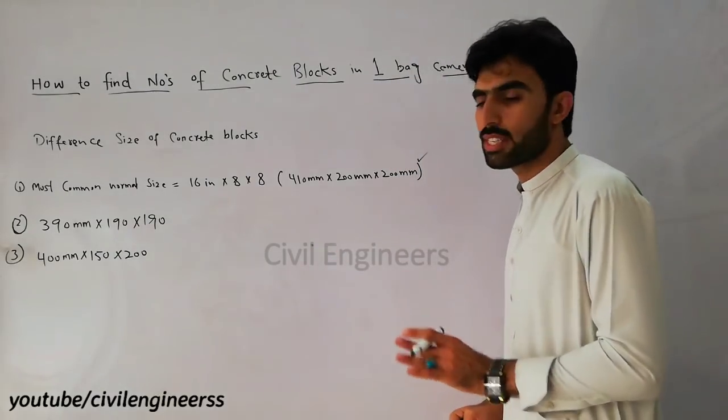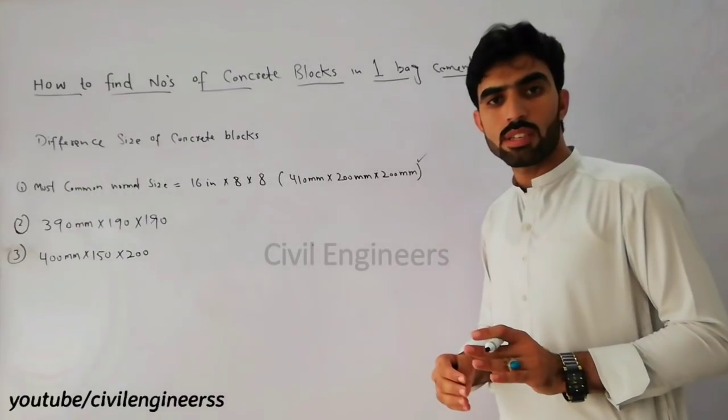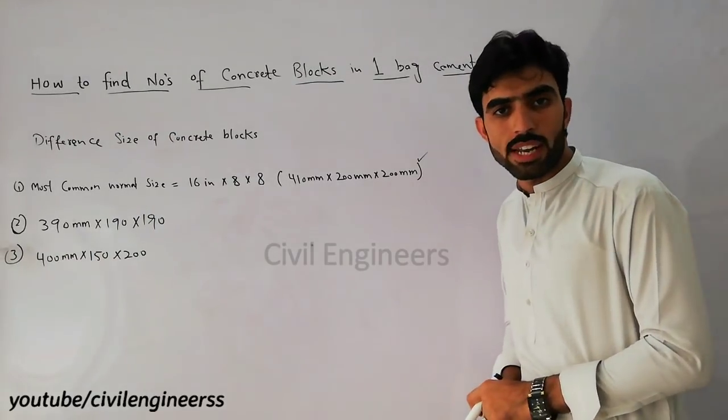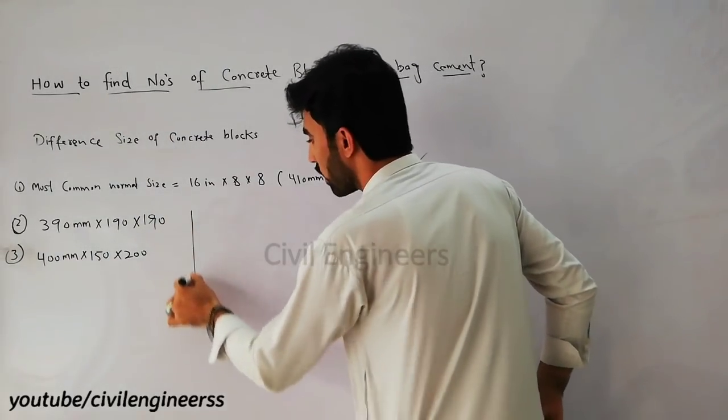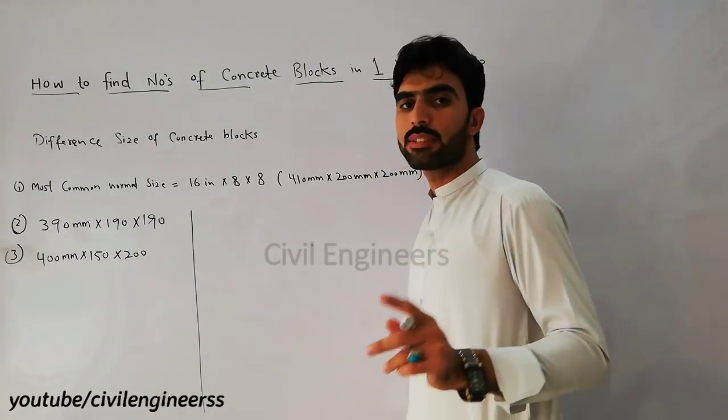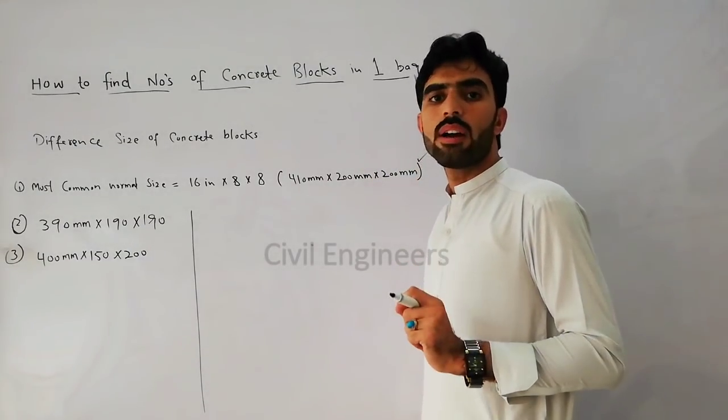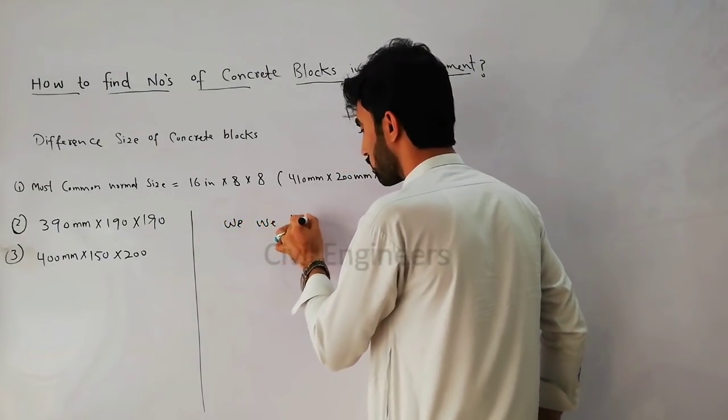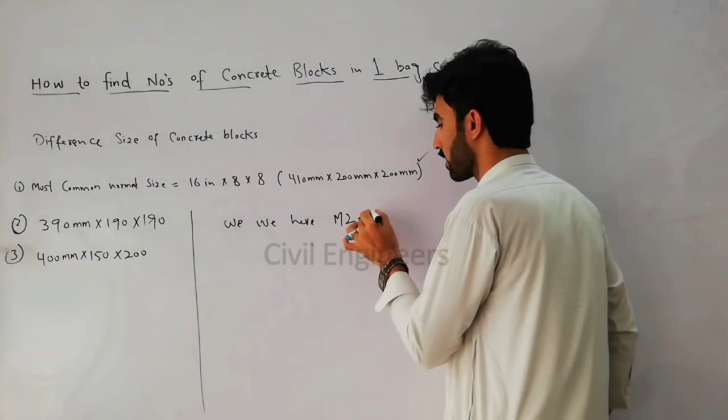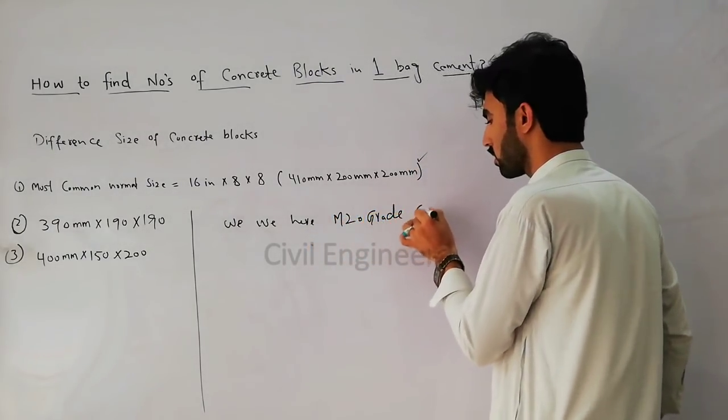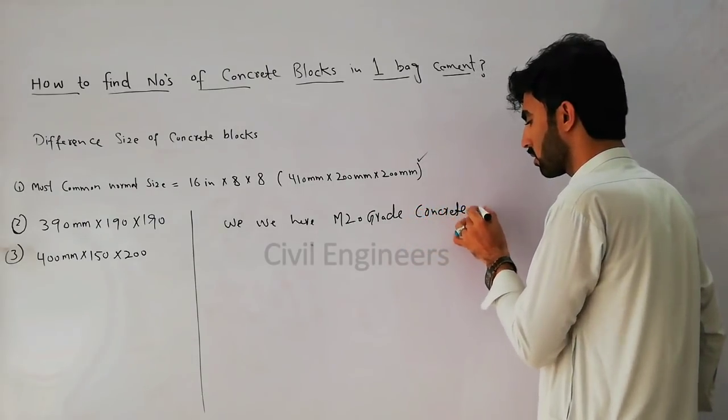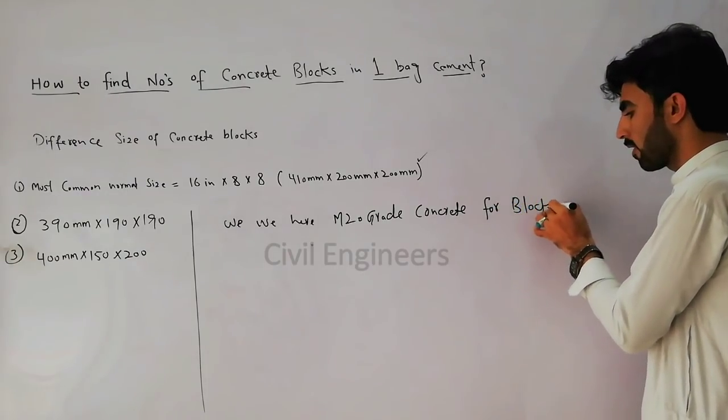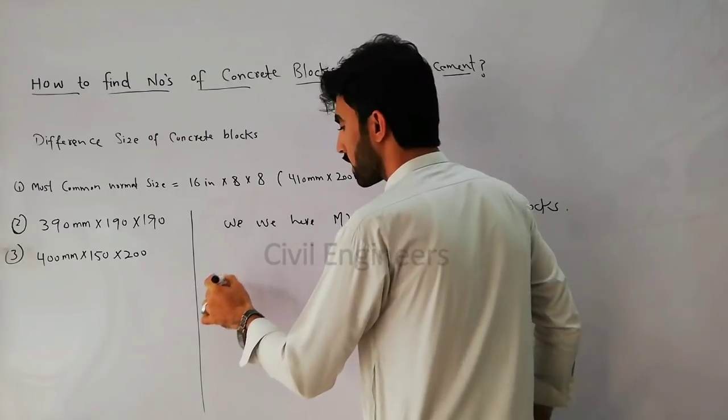Let's suppose I have to find concrete blocks in one bag of cement if I use M20 grade of concrete. So we use here M20 grade concrete for blocks. We know that the M20 grade of concrete ratio is 1:2:4.